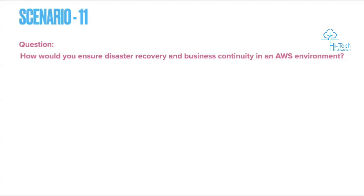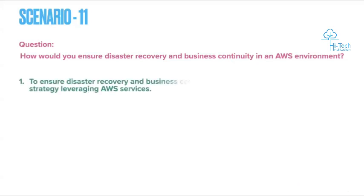Scenario 11: How would you ensure disaster recovery and business continuity in an AWS environment? The question is: when working in an environment, if people ask how you would ensure disaster recovery and business continuity — whether there's any natural disaster or other impact — how will you ensure business continuity in AWS? To ensure disaster recovery and business continuity, I would implement a multi-tiered strategy leveraging AWS services.